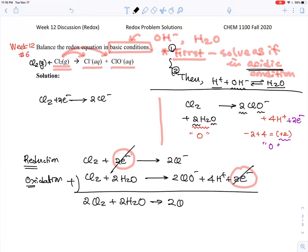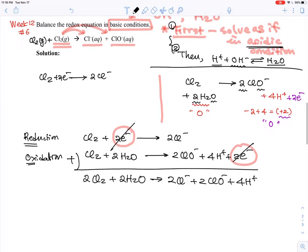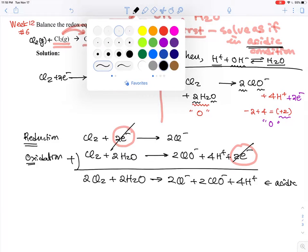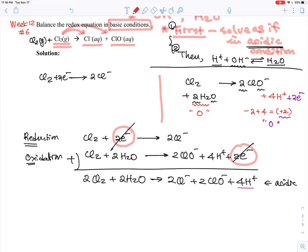Simply add them up. This is gone. And then I finally got two Cl2 plus two H2O becomes two Cl minus plus two ClO minus plus four H plus. This is once again as if it is an acidic condition.